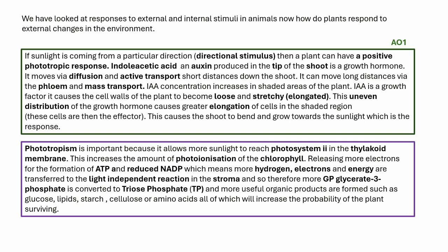IAA is a growth factor — it causes the cell walls to become loose and stretchy, causing elongation. This uneven distribution of the growth hormone causes greater elongation in the shaded region; these cells act as the effector, causing the shoot to bend towards the sunlight. The AO2 importance: more sunlight reaches photosystem 2 in the thylakoid membranes, causing more photoionization of chlorophyll. More electrons get excited and enter the electron transport chain, forming more ATP and reduced NADP. These are transferred to the Calvin cycle in the stroma, producing more GP converted to triose phosphate, then to glucose, starch, cellulose, and other organic substances.